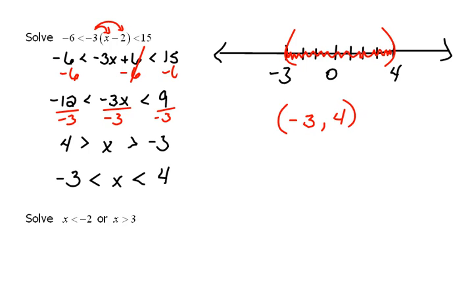For our set builder notation, this should be the set of all x's such that -3 is less than x is less than 4. Remember our answer there really matches our set builder notation.